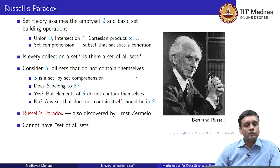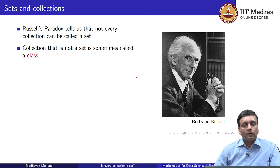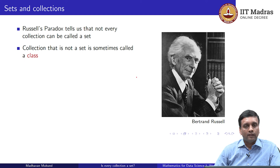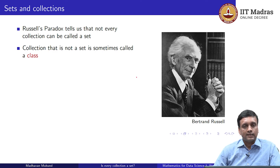If we did not have a set of all sets, we could not have done the set comprehension, and therefore we would not have reached this absurd conclusion. So Russell's paradox really tells us that not every collection can be called a set. In particular, the set of all sets does not exist. Russell went through an exercise of trying to formulate a different version of set theory, which he called type theory. But in modern mathematics, if you are not sure that what you are dealing with is a set, it is safer to call such a collection a class.